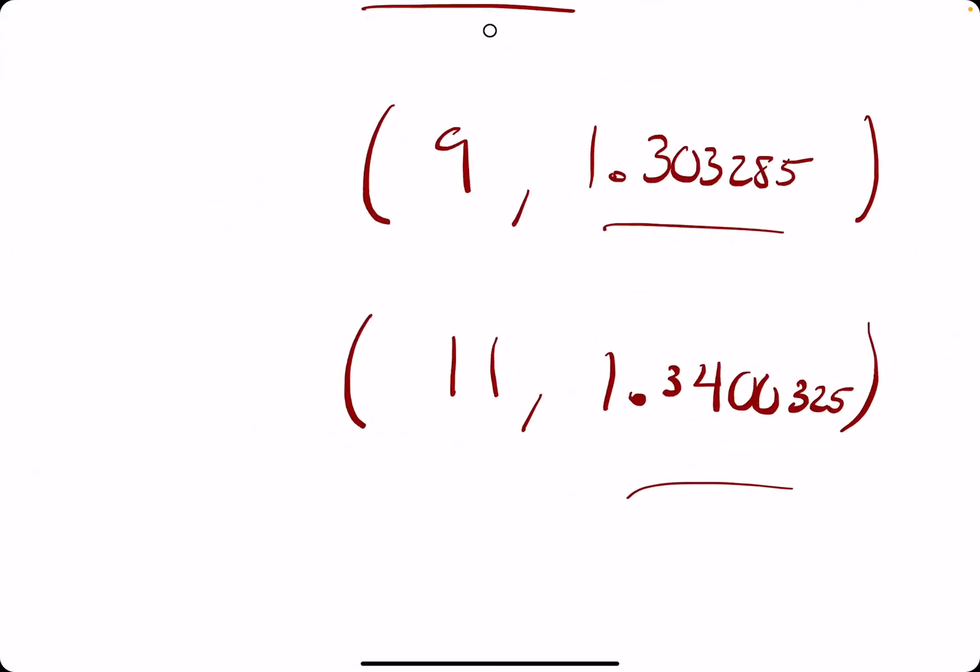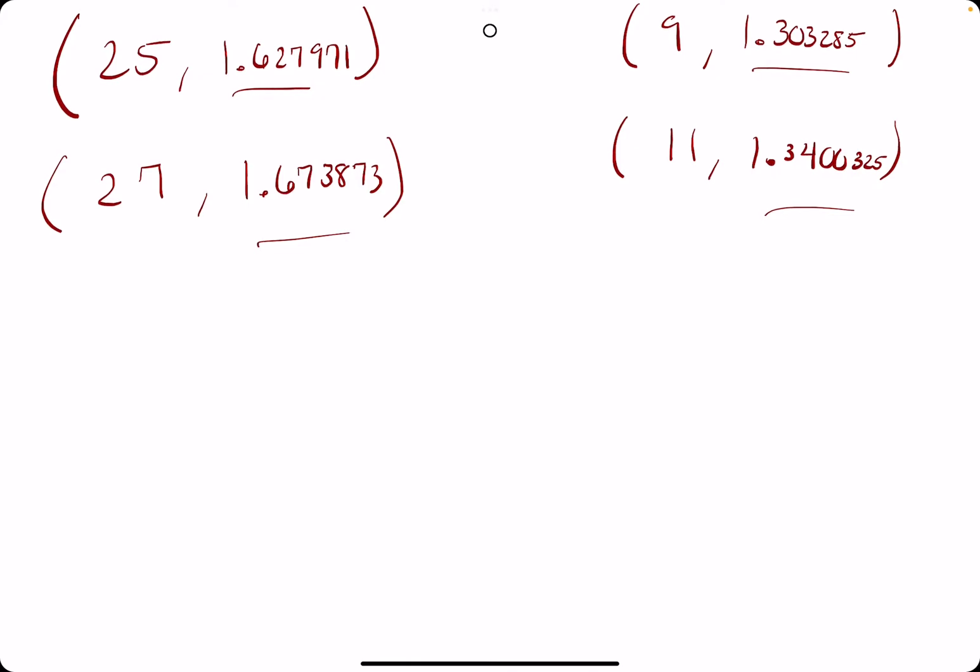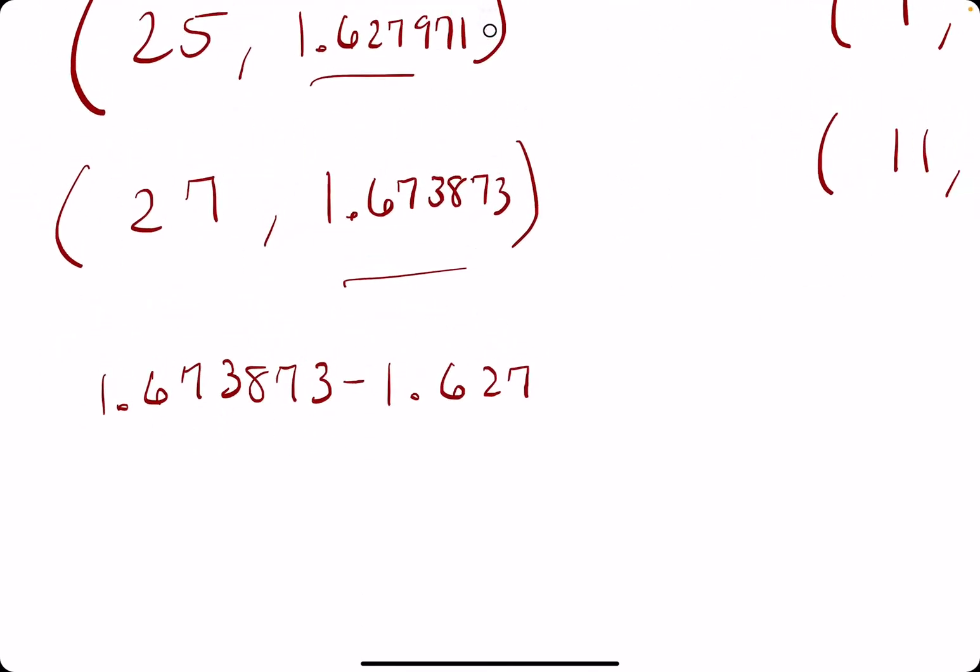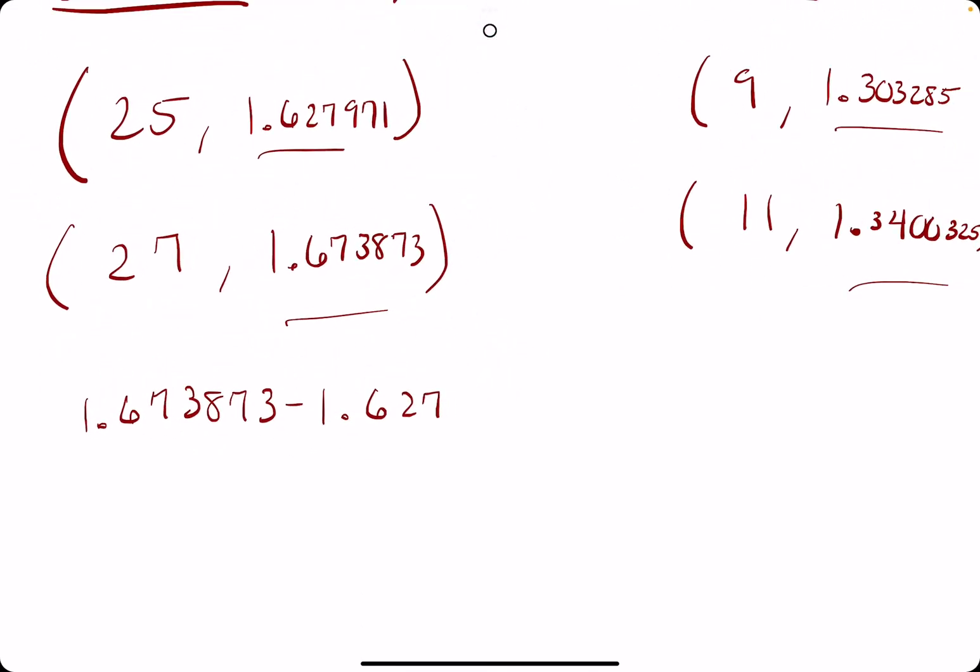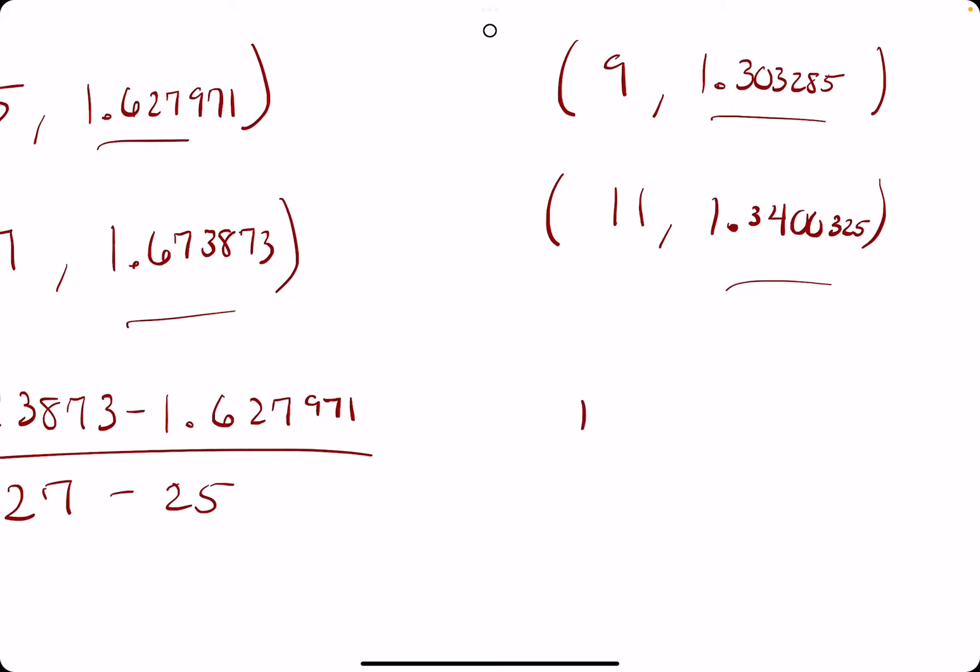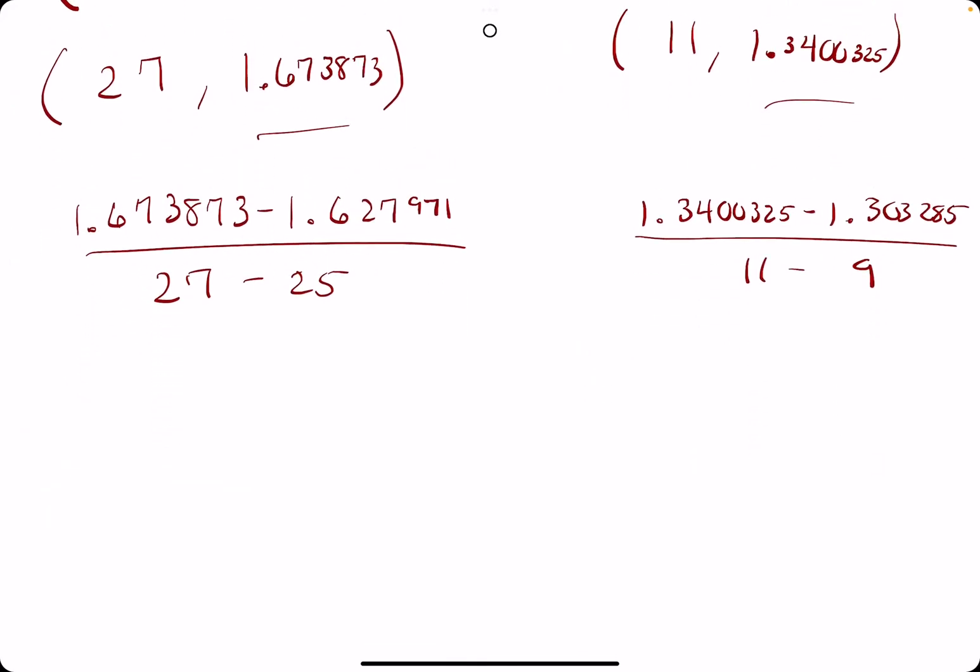All right, so we have all our ordered pairs that we need because now we are finding the slopes between these two points and then the other two points for the other 2003 year. It's just very tedious with all the huge values or huge decimal places, but hopefully it's not too bad. Ultimately, so we're doing y2 minus y1 over x2 minus x1 for both of these ordered pairs.